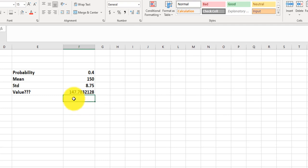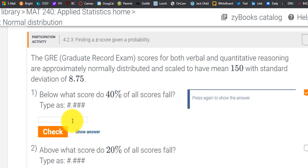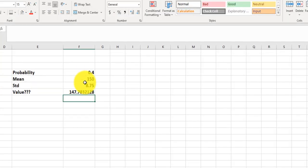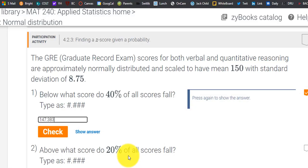And it looks like we get 147.783, because I believe it told us to round to three decimal places. So 147.783. I think that's what it said. Let's take another look. 147.783.